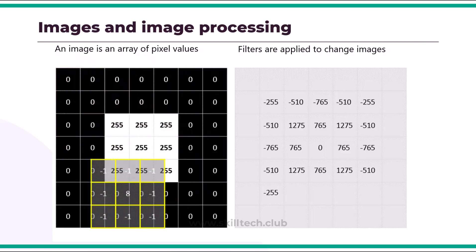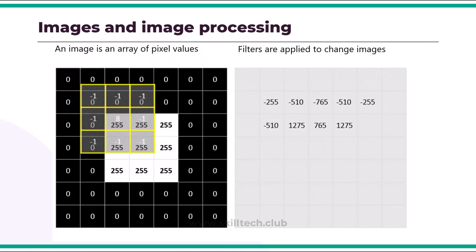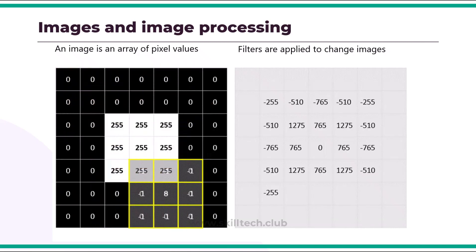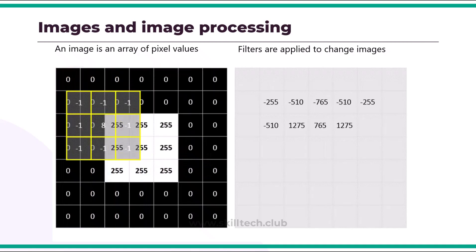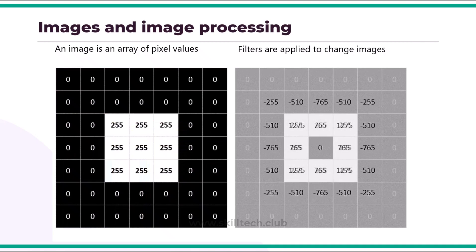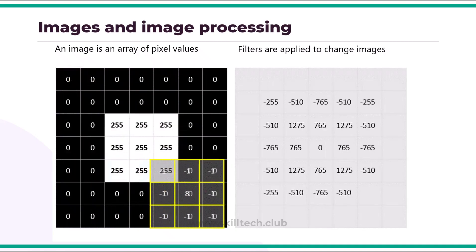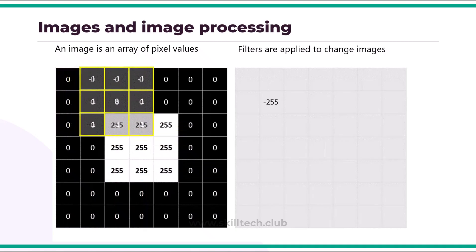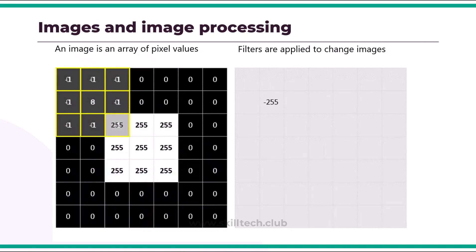Each pixel has a value between zero and 255, where zero stands for black and 255 stands for white, and the image is read based on that. A common way to perform image processing tasks is to apply filters that modify the pixel values of the image to create a visual effect. A filter is defined by one or more areas of pixel values, which we call kernels. For example, you could define a filter with a three by three kernel, as shown in this example.